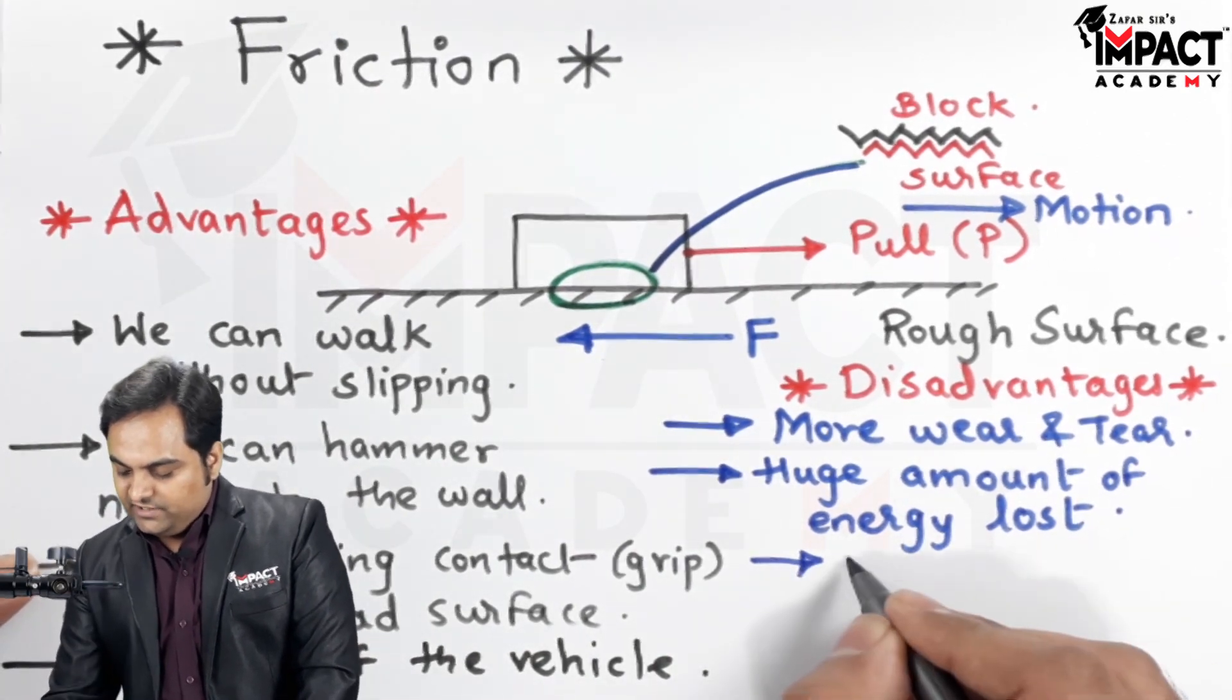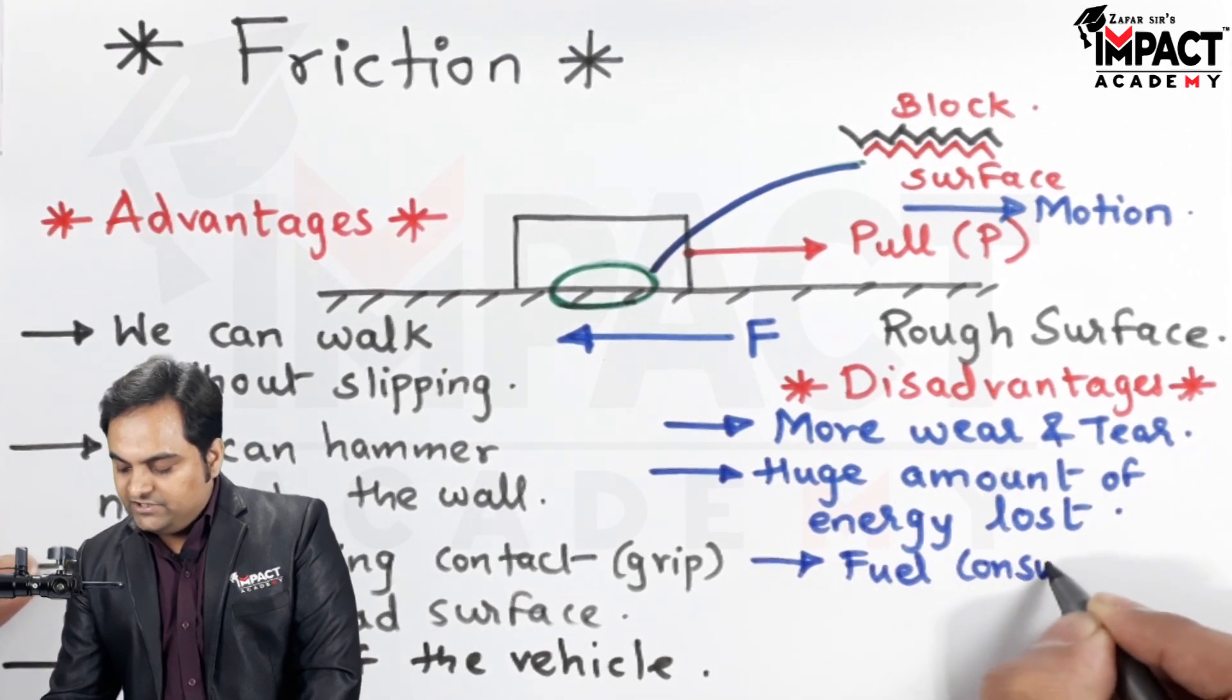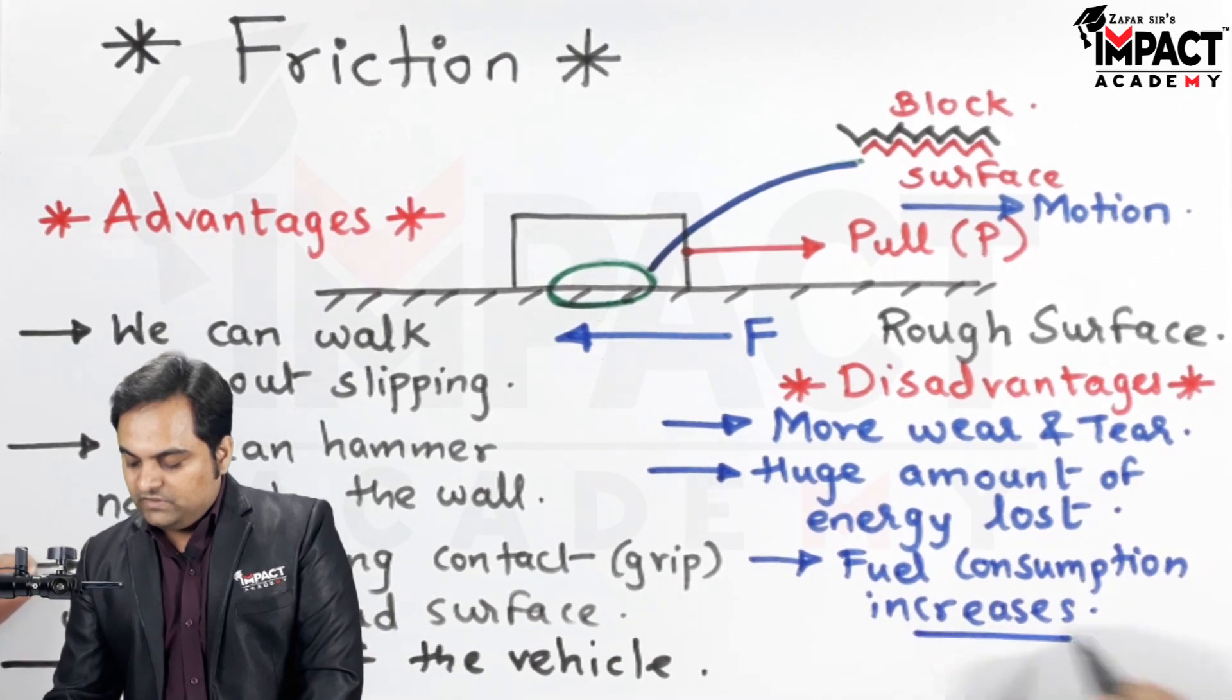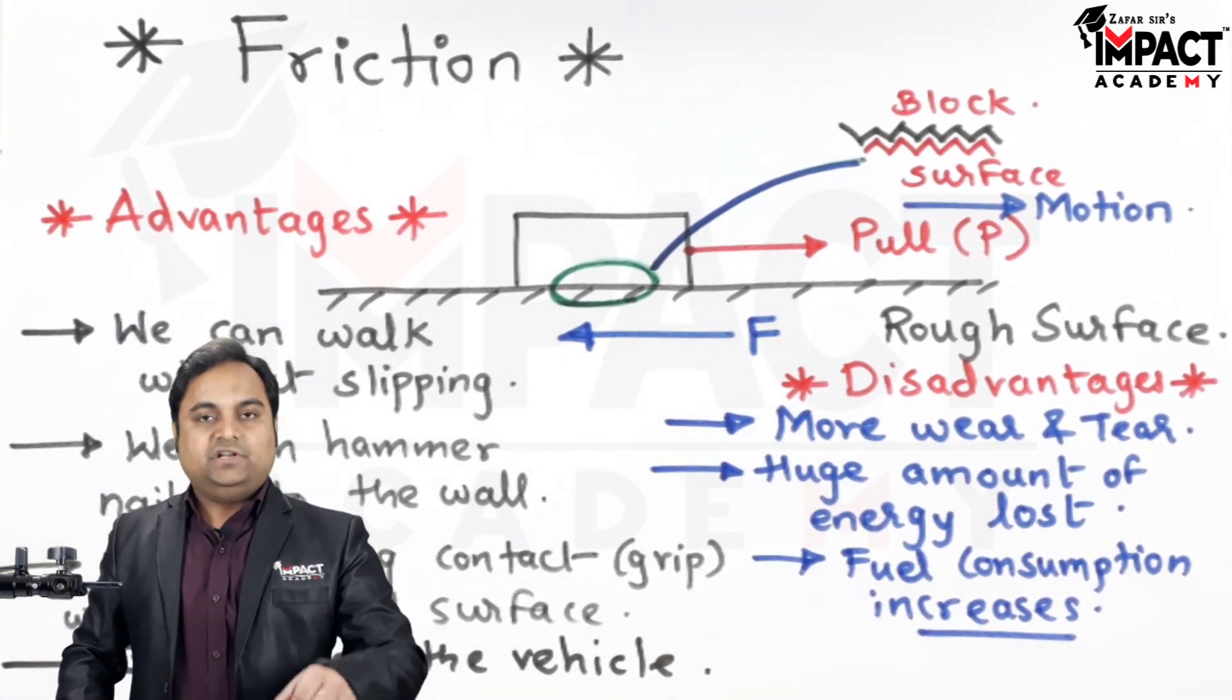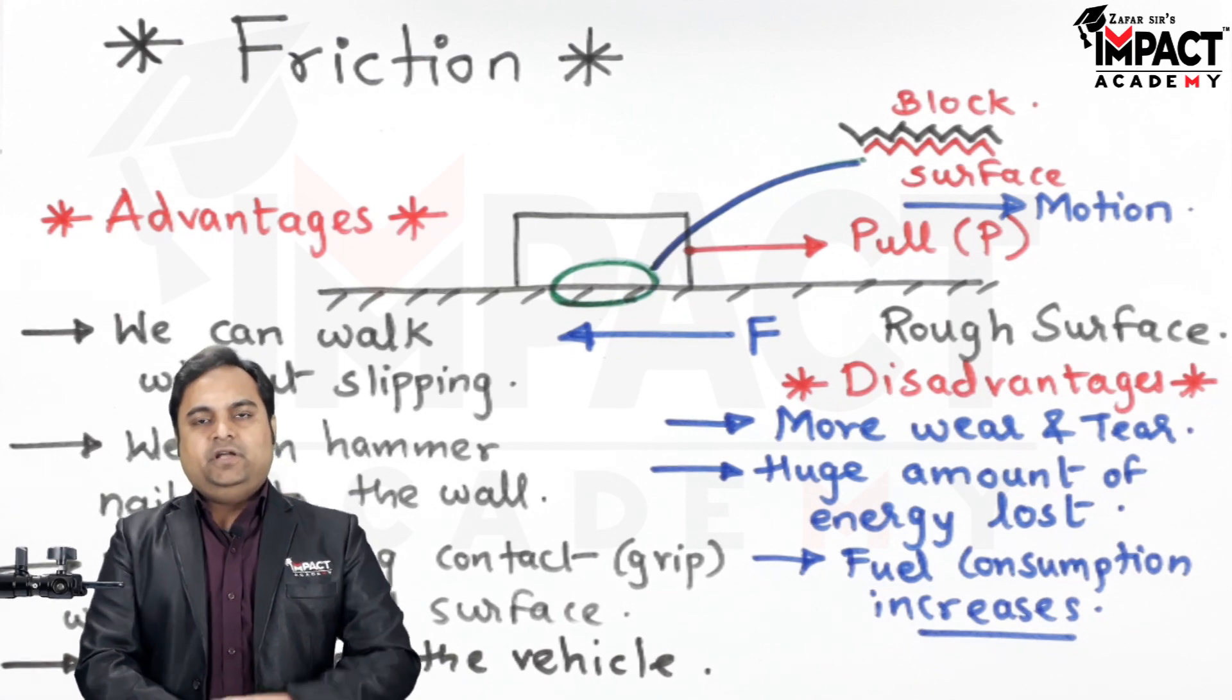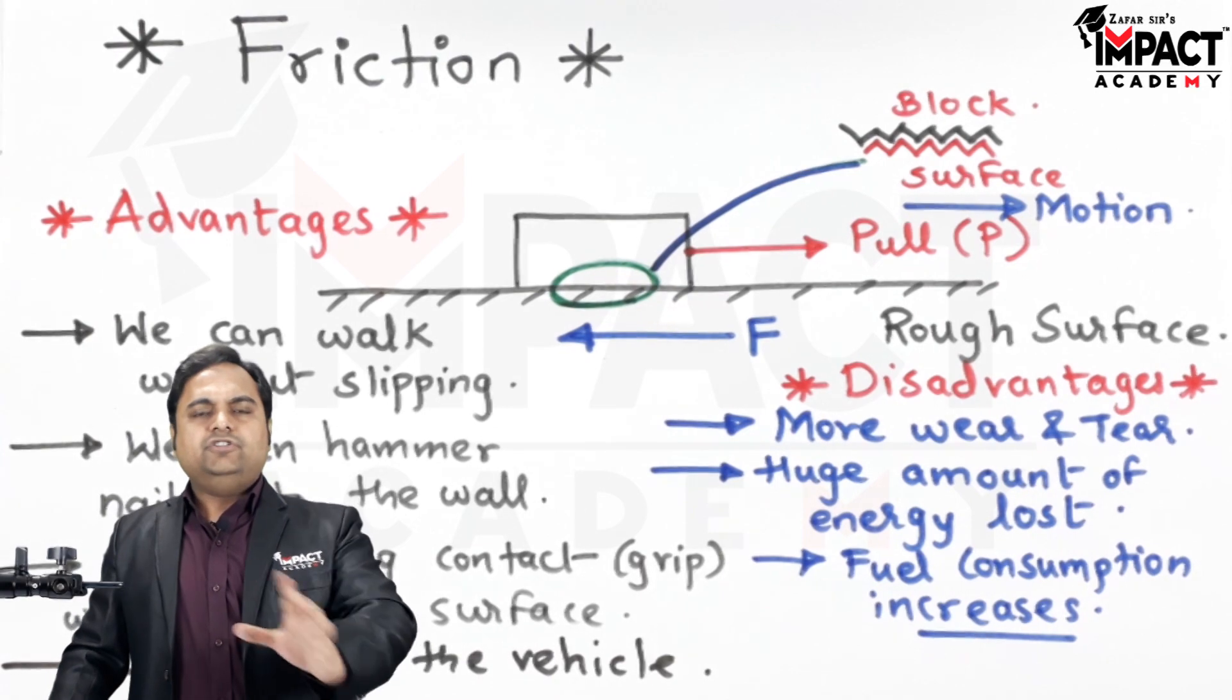The last point which I am mentioning is fuel consumption. If we are talking about engine, inside the engine we have piston and cylinder. Due to the sliding motion of the piston there is more amount of friction and due to friction the amount of fuel consumption also increases. That was a quick summary of what is meant by friction.